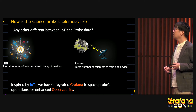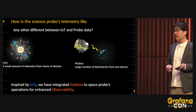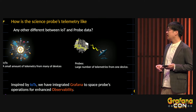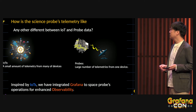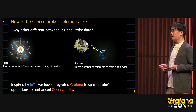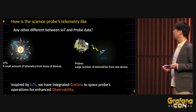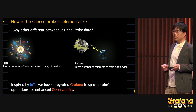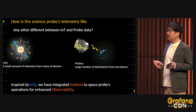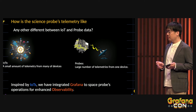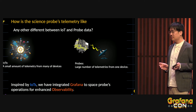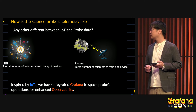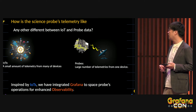What's the difference between IoT and probe data? In IoT, we collect a small amount of telemetry from many devices. In a space probe, we collect a large number of telemetry parameters from one big device. The content of the data is still similar. So, inspired by IoT practices, we integrated Grafana into space probe operations for enhanced observability.